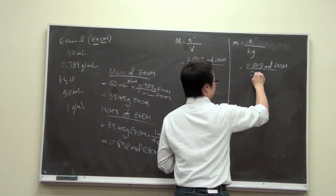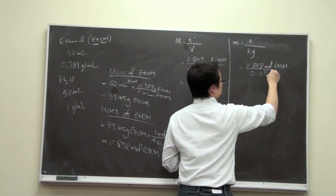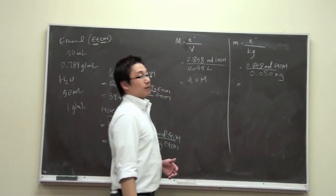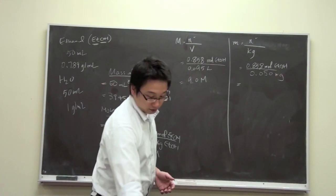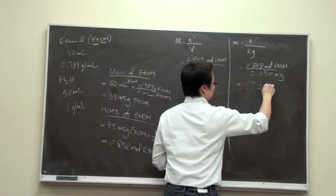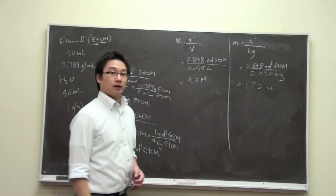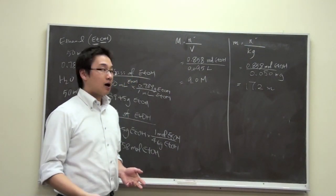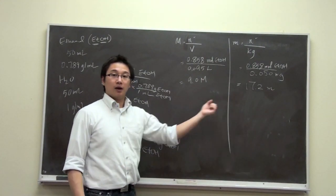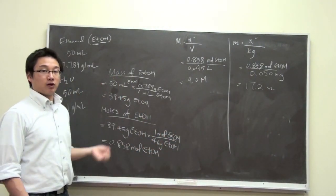And let's just change the 50 grams to kilogram. And if we use our calculator, we will find out that the molality is 17.2. So this is how we can calculate both molarity and molality based on the information given right here from the question.